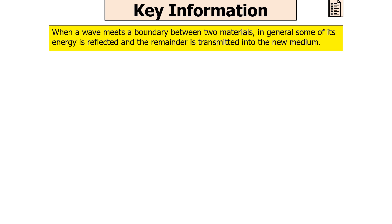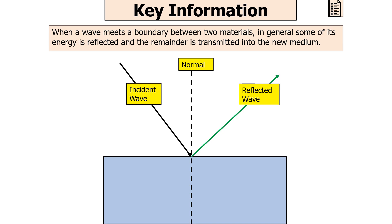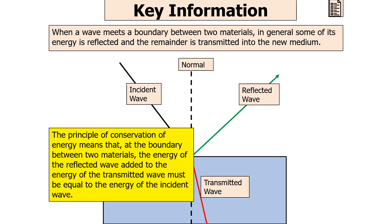When a wave meets a boundary between two materials, some of its energy is reflected and the remainder is transmitted into the new medium. Whilst there is a reflected wave, some of the wave is also transmitted through. The principle of conservation of energy means that at the boundary the energy of the reflected wave added to the energy of the transmitted wave must equal the energy of the incident wave.